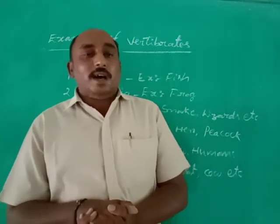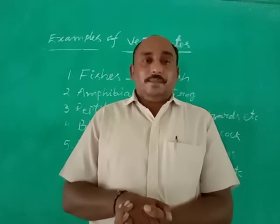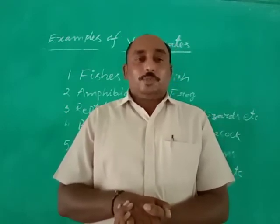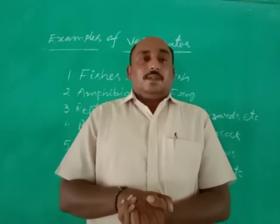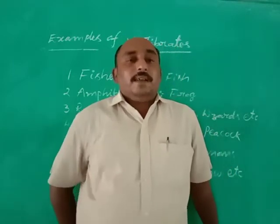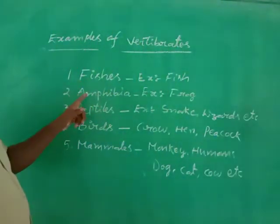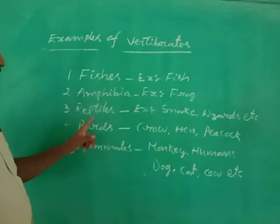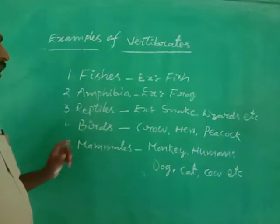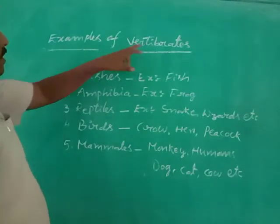The second group of animals is vertebrates. Vertebrates contain a vertebral column or spinal cord. Vertebrates are again divided into five groups: fishes, amphibians, reptiles, birds, and mammals. These organisms are known as vertebrates.